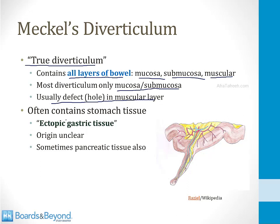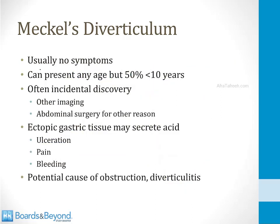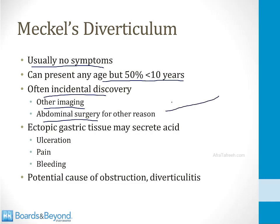Meckel's diverticulum often contains ectopic gastric tissue — this is high yield and can be used for diagnosis. It may also contain ectopic pancreatic tissue. Most people with a Meckel's diverticulum are asymptomatic, but when symptomatic, half present before age 10. They may be discovered incidentally on abdominal imaging or during surgery. The ectopic gastric tissue may secrete acid, causing ulceration, abdominal pain, bleeding, obstruction, or diverticulitis.